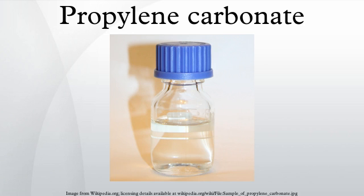Propylene carbonate is an organic compound with the formula CH3C2H3O2. It is a carbonate ester derived from propylene glycol. This colorless and odorless liquid is useful as a polar aprotic solvent. Propylene carbonate is chiral but is used exclusively as the racemic mixture.